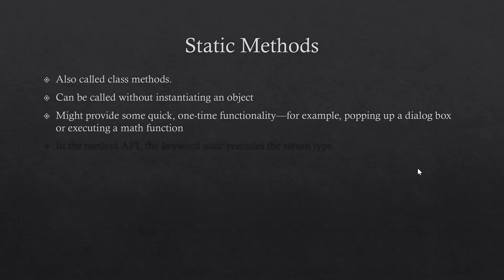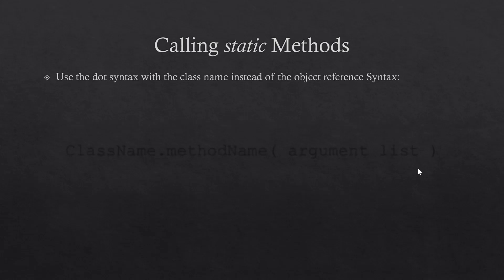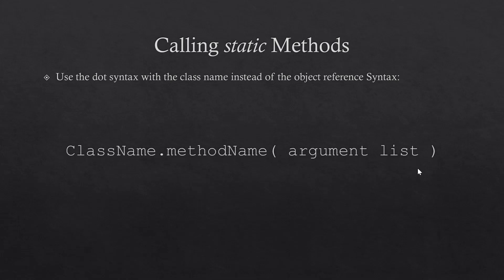To know that a method is static, you'll find in the API for that class the keyword static before the return type. To call a static method, we use dot notation, but instead of using the object reference dot the method name, we use the class name dot the method name. We do not need to create objects of the class; we can directly use the class name dot the method name, passing any arguments in the parentheses.